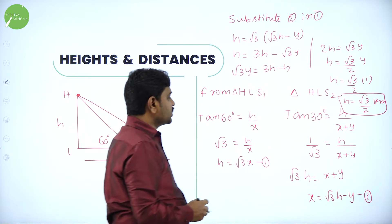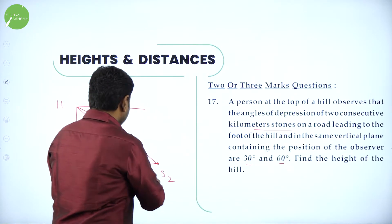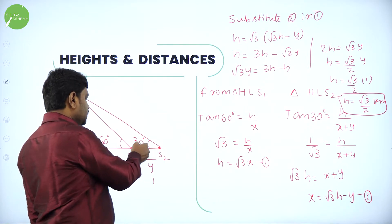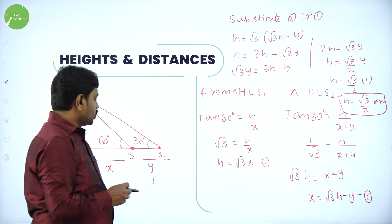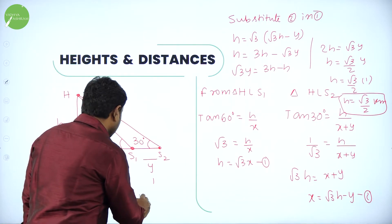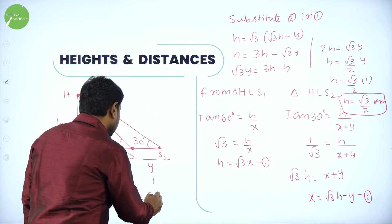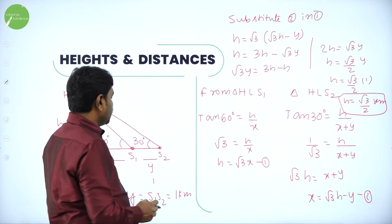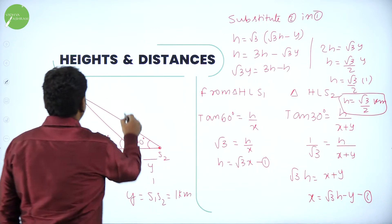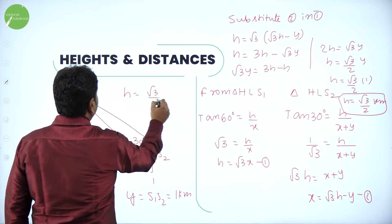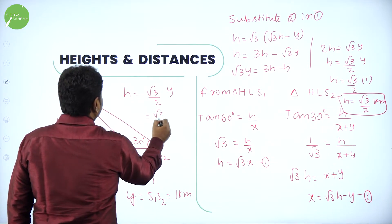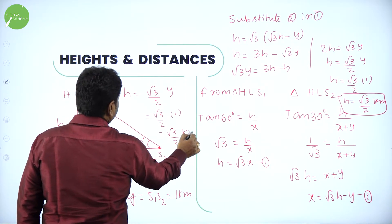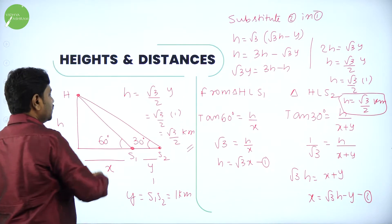Consecutive kilometer stones means the distance between them is exactly one kilometer — for example, the 99th and 100th stones. So y equals one kilometer and H equals root 3 by 2 times 1 kilometer, which is root 3 by 2 kilometers. This is the height of the hill.